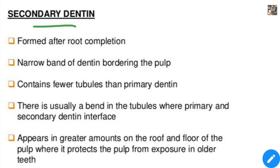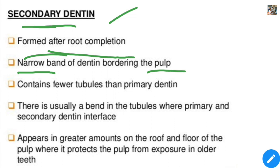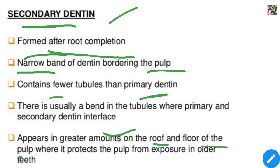The second type is secondary dentine. Primary dentine was formed before root completion and before the eruption of the teeth. Secondary dentine is formed after root completion. It contains fewer tubules than primary dentine, and a greater amount is deposited on the roof and floor of the pulp.